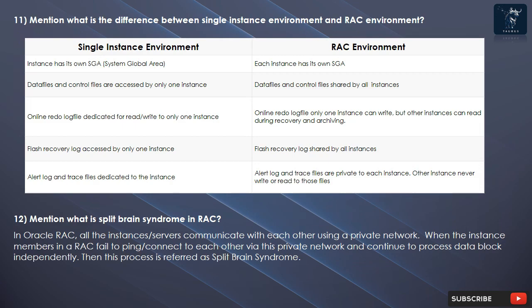In a RAC environment, each instance has its own SGA. Data files and control files are shared by all instances. For the online redo log file, only one instance can write, but other instances can read during recovery and archiving. The flash recovery log is shared by all instances. Alert log and trace files are private to each instance; other instances never write or read those files.